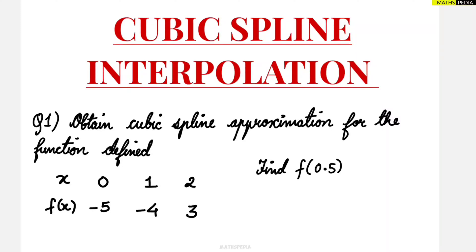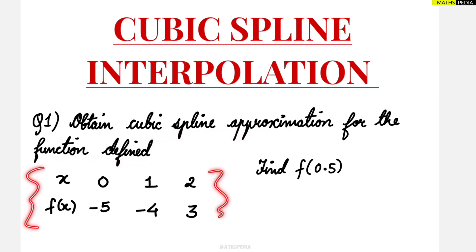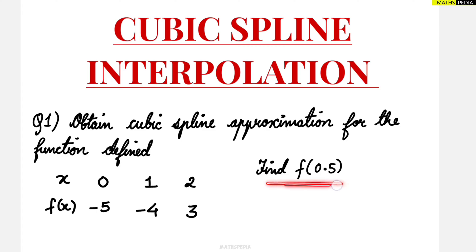In this video we are going to learn cubic spline interpolation. We are taking up the first question: obtain the cubic spline approximation for the function defined over here. The x values and corresponding f(x) values are given. We need to find f(0.5), that is, at x equal to 0.5, what will be the f(x) value? Let us understand the procedure.